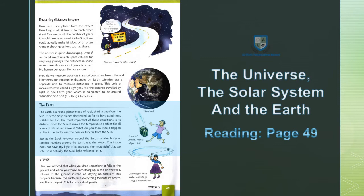That smaller body is the Moon — چاند۔ The moon does not have any light of its own. The moonlight that we refer to is actually the sun's light reflected by it.